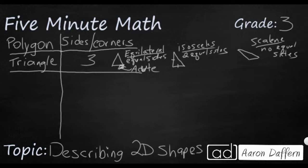My isosceles triangle here is a right triangle because it has a square corner, or a right angle. It is possible to draw isosceles triangles without right angles — I just happen to draw one here. And then finally, we've got this big angle right here — this is an obtuse triangle because it has an angle that is larger than 90 degrees.